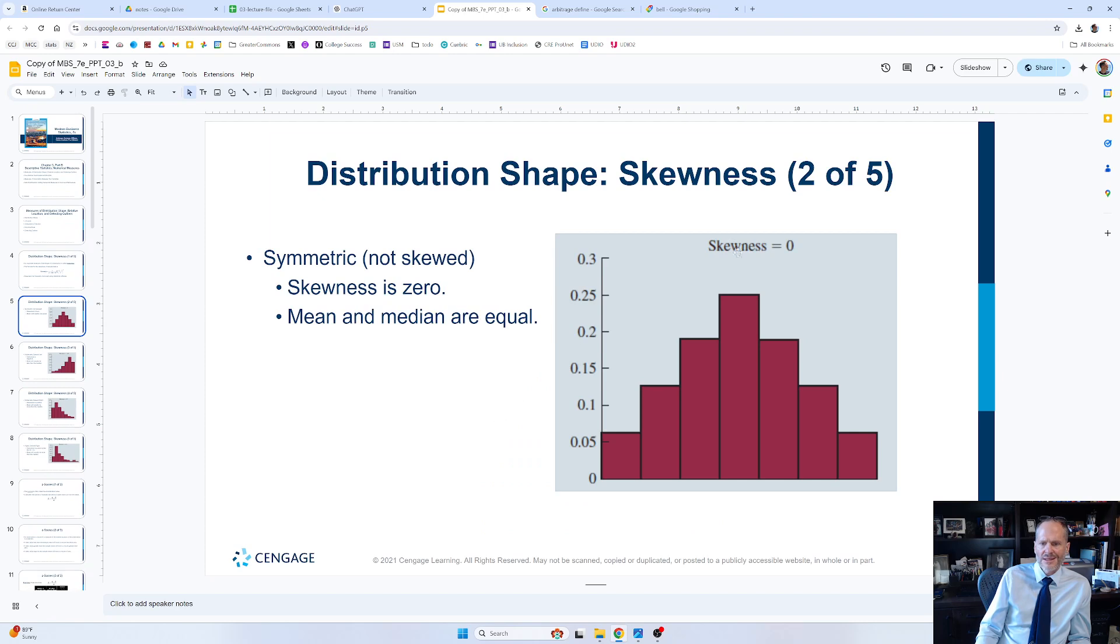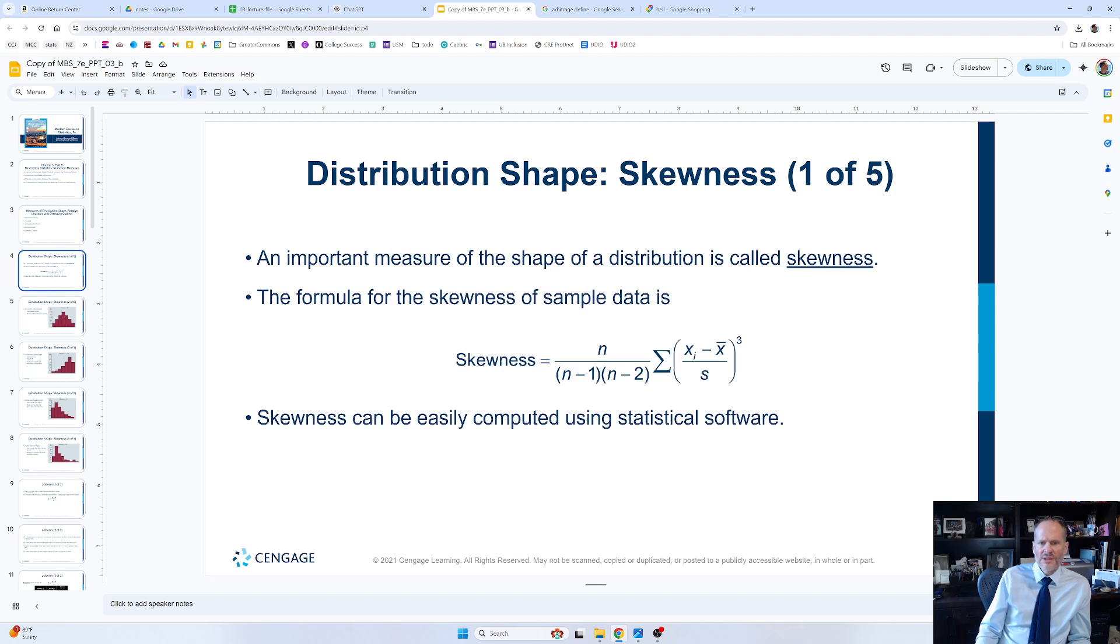It can be not skewed like this. This is also kind of like the bell-shaped curve. But an important measure of the shape of distribution is called skewness. And here's a formula for measuring skewness. And skewness can be computed with statistical software. We're not going to do it.